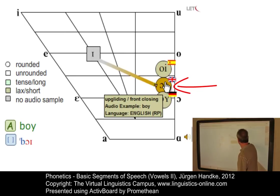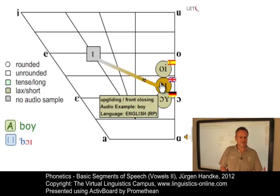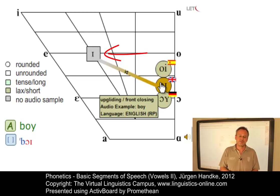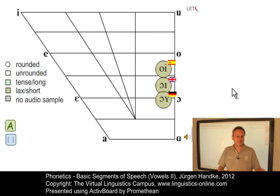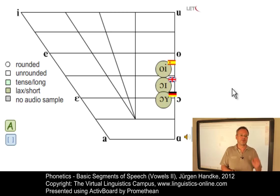Somewhere in between we have the British English RP version — 'boy'. This diphthong involves an almost mid-onset and the shortest transition, the shortest glide. It is still front upgliding but the front upglide ends in an unrounded, mid-high, centralized vowel. Judgements like these require intensive phonetic training — this cannot be emphasized often enough — and even then phoneticians keep arguing about the exact placement of the vowels and their parts on the cardinal vowel chart.